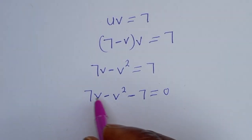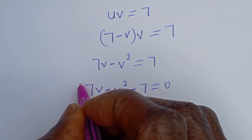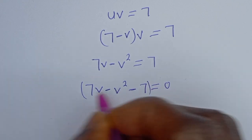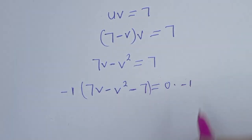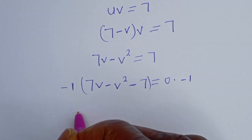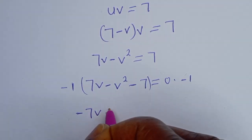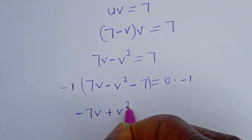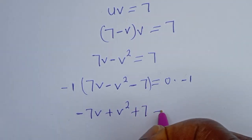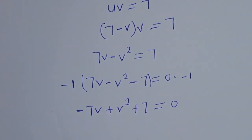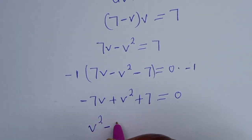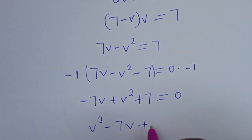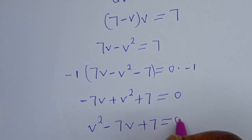This gives us 7v minus v squared minus 7 equal to 0. Let's multiply all terms by minus 1. That gives minus 7v plus v squared plus 7 equal to 0. We can rearrange this: v squared minus 7v plus 7 is equal to 0.